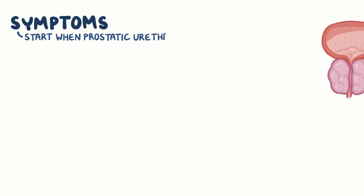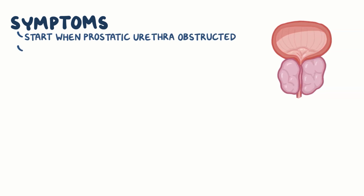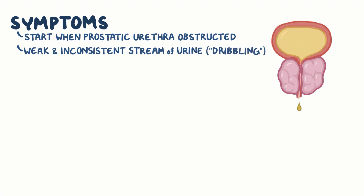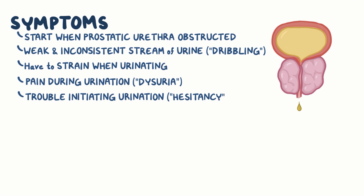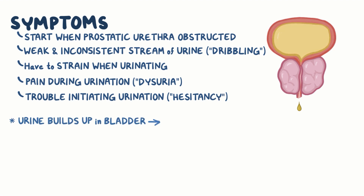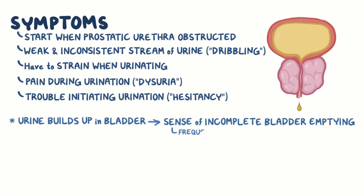Symptoms of BPH start when the prostatic urethra gets obstructed, and that can lead to a weak and inconsistent stream of urine, called dribbling. The person might also have to strain when urinating to overcome the obstruction, have pain during urination called dysuria, or trouble initiating urination called hesitancy. As urine builds up in the bladder, it causes a constant sense of incomplete bladder emptying, which increases the frequency of urination at night, called nocturia.